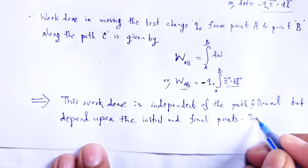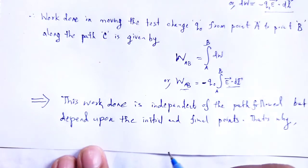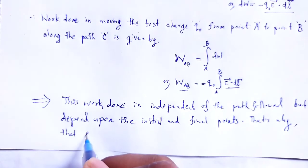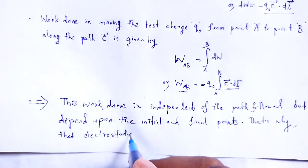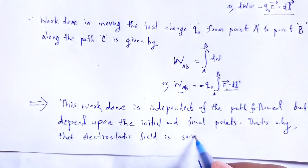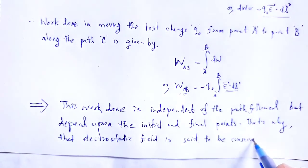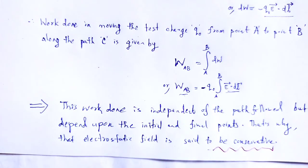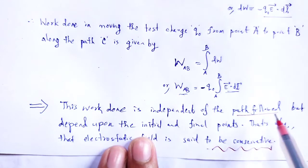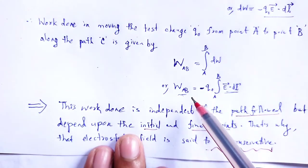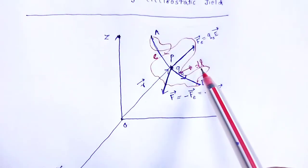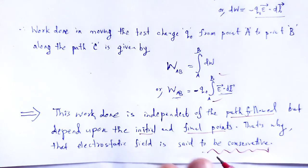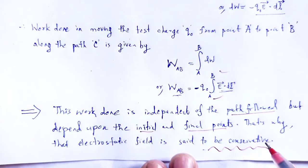That is why the electrostatic field is said to be conservative. As we defined, a conservative field is that field in which the work done is independent of path followed but depends upon the initial and final points. Here the work done is independent of path followed as we derived, but depends upon the initial and final points. That is the way we can say the electrostatic field is conservative in nature.